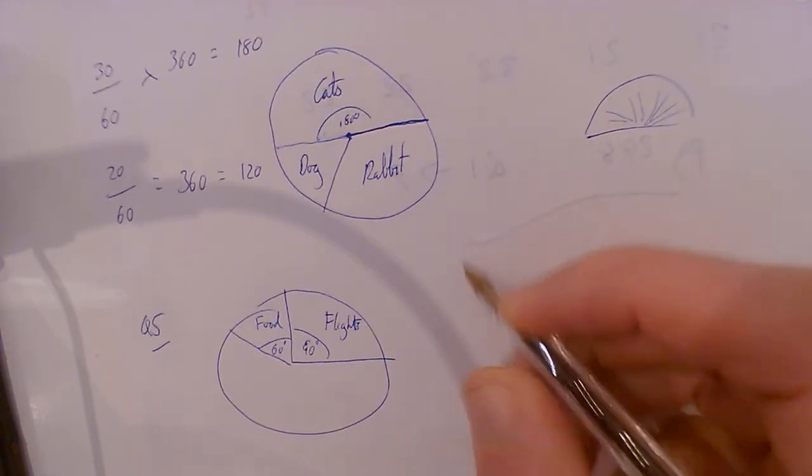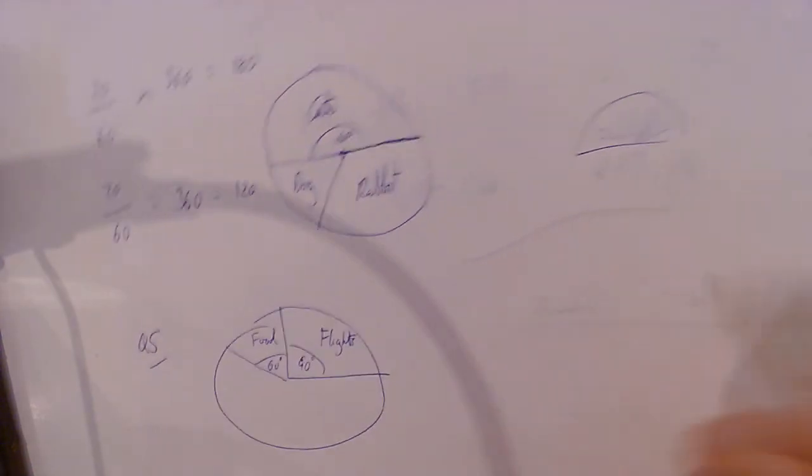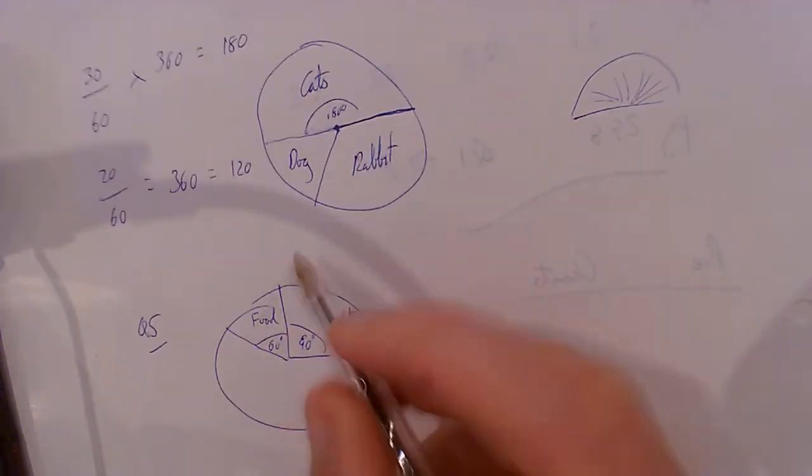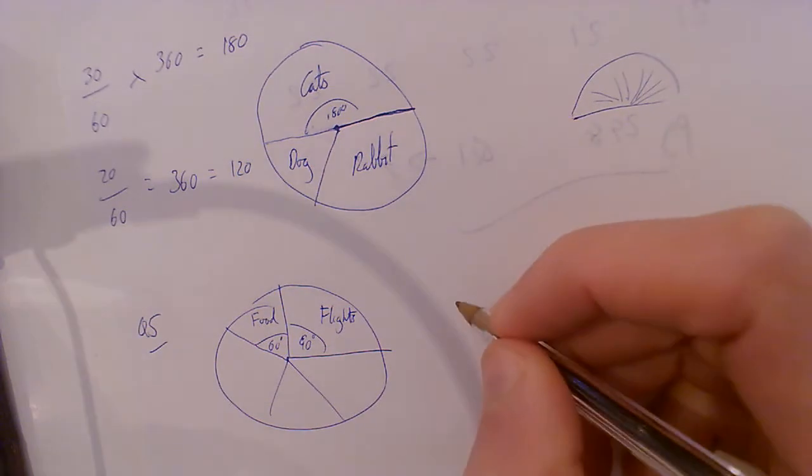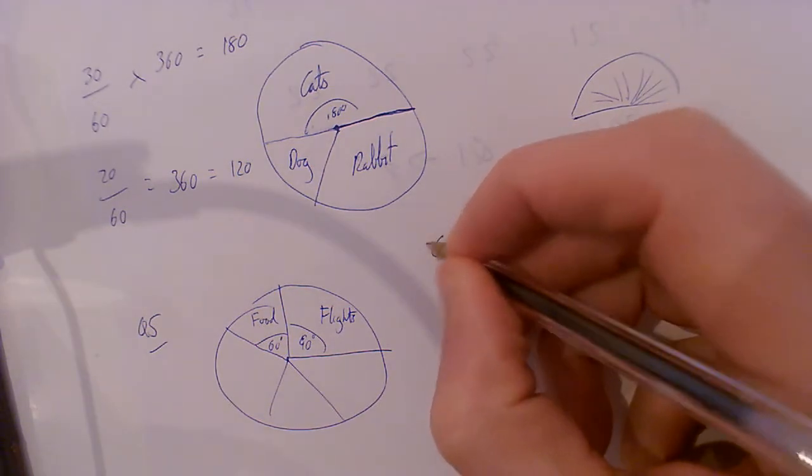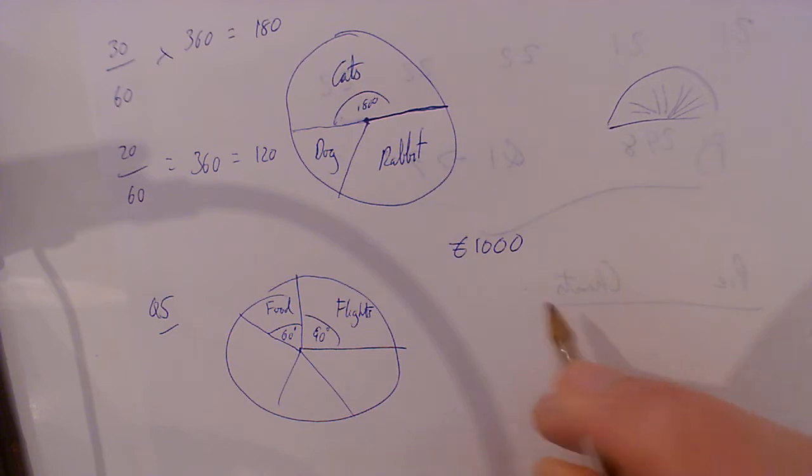It says the flights cost... so I'm going to show you a whole bunch of ways. If all of this represents money that you spent for a holiday, and let's say you spent 1,000 euro, how much did the flights cost?